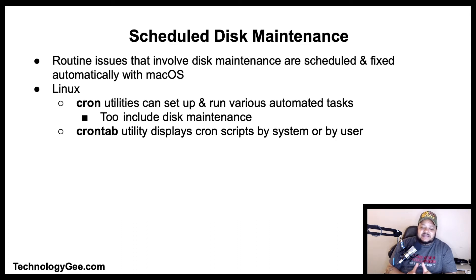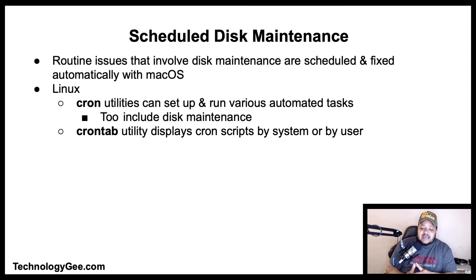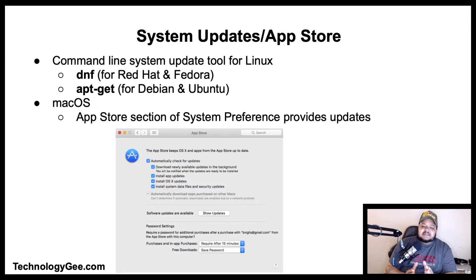Next we have scheduled disk maintenance. Routine issues involving disk maintenance are scheduled and fixed automatically with Mac and Linux systems. The cron utility can set up and run various automated tasks, including disk maintenance. The crontab utility displays cron scripts run by the system or by a user.